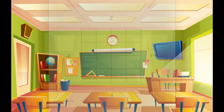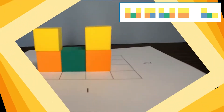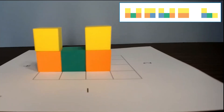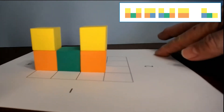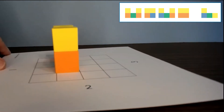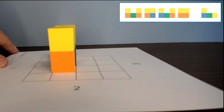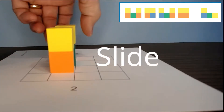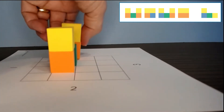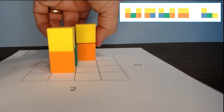Before building a design, let's explore a few tips. When you turn to the next view, you might see that cubes on the previous view need to slide. Only move horizontally — left and right — not vertically. Moving blocks forward or backward would change the previous view.